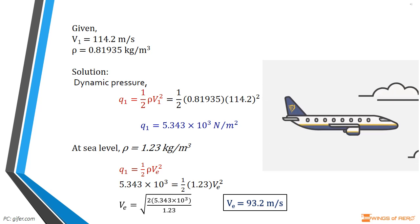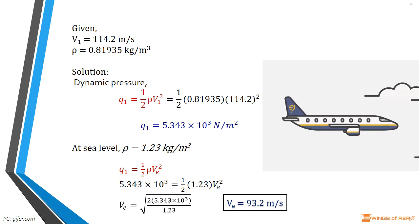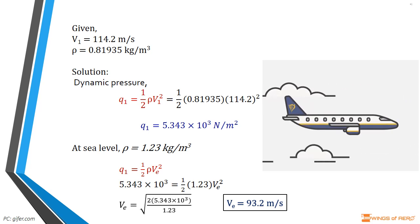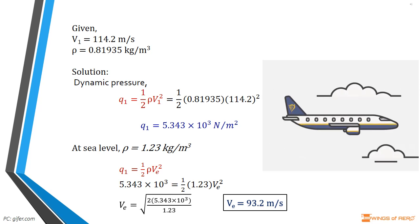For an airplane to experience the same dynamic pressure, its new velocity V_E must satisfy dynamic pressure Q₁. So, we can write Q₁ = 1/2 × ρ × V_E². We know that at sea level density ρ = 1.23 kilogram per meter cube. Now, substitute Q₁ and ρ values and solve we get the required velocity V_E = 93.2 meter per second.